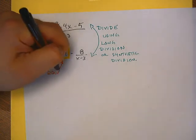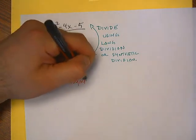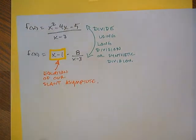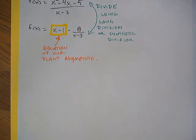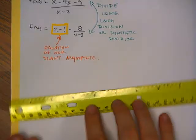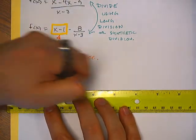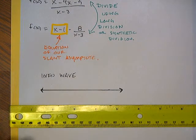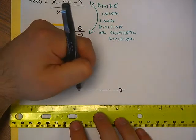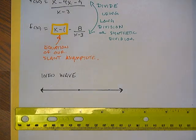So x minus 1 is the equation of our slant asymptote — given by the quotient, not the remainder. Now we can keep going and make our information wave. The information wave is just going to tell us where we're positive and where we're negative on our graph. And if there's any multiplicity in our function, we have to take that into account and bounce, wiggle, or cross wherever the function calls for it.